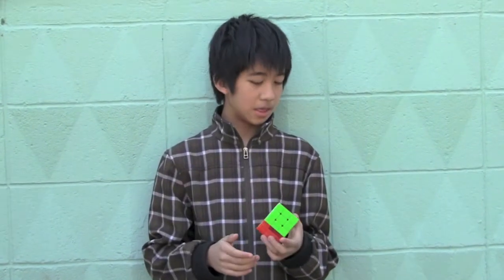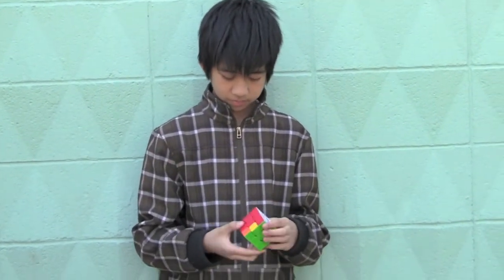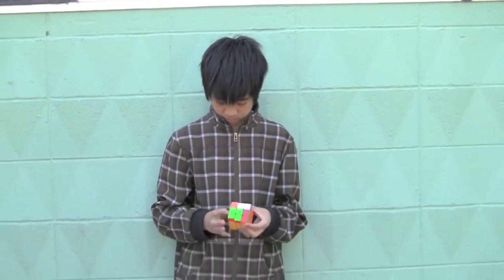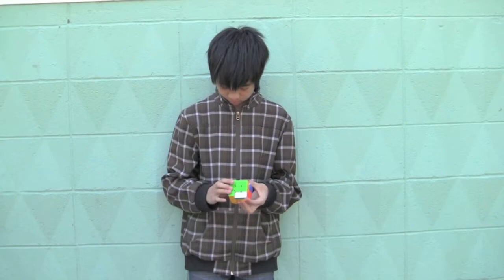The next step in solving the 3x3 Rubik's Cube is something called PLL, which is permuting the last layer. It's just moving around the pieces on the last layer to make the cube solved. There will be two parts in this as well, and here's Eugene to explain.